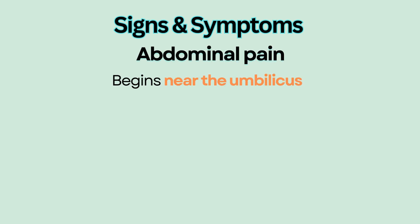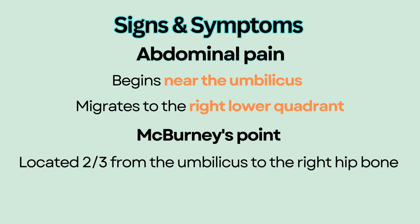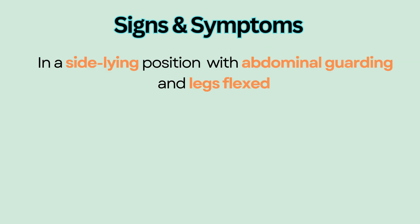Signs and symptoms: Patients will experience abdominal pain that usually begins near the umbilicus and migrates to the right lower quadrant. This area is referred to as McBurney's point and it is located two-thirds the distance from the umbilicus to the right hip bone. When pressure is applied over McBurney's point and is then quickly released, patients with appendicitis will have severe pain, which is indicative of a positive McBurney's sign. You may see patients in a fetal position — a side-lying position with abdominal guarding and legs flexed to relieve pain.